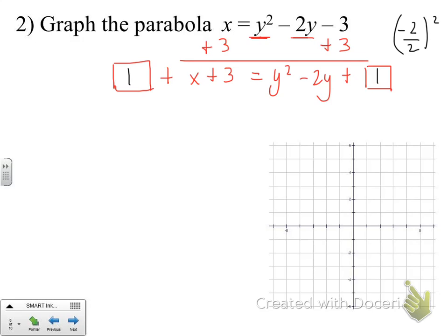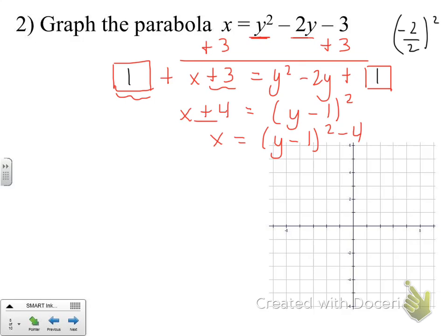On the left side we combine the like terms 1 and 3, and we write the trinomial as the square of a binomial: (y minus 1) squared. Then we subtract 4 from both sides to get our equation into vertex form. There's our equation transformed into vertex form.